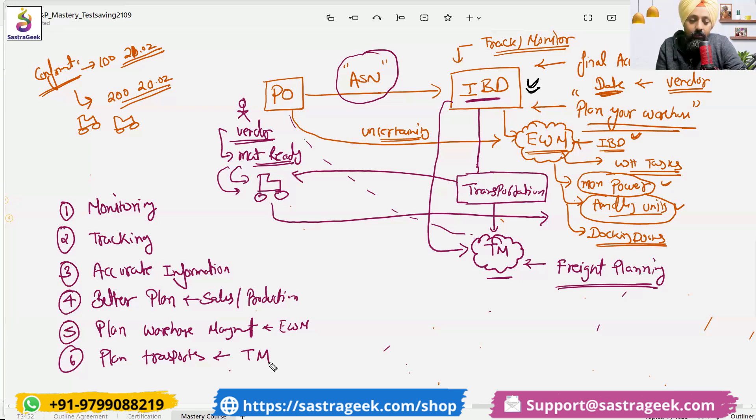We will be able to plan warehouse management with EWM integration, and we will be able to plan our transports and integrate with the SAP TM module. These are the basic benefits — the pros — which we get from inbound delivery.